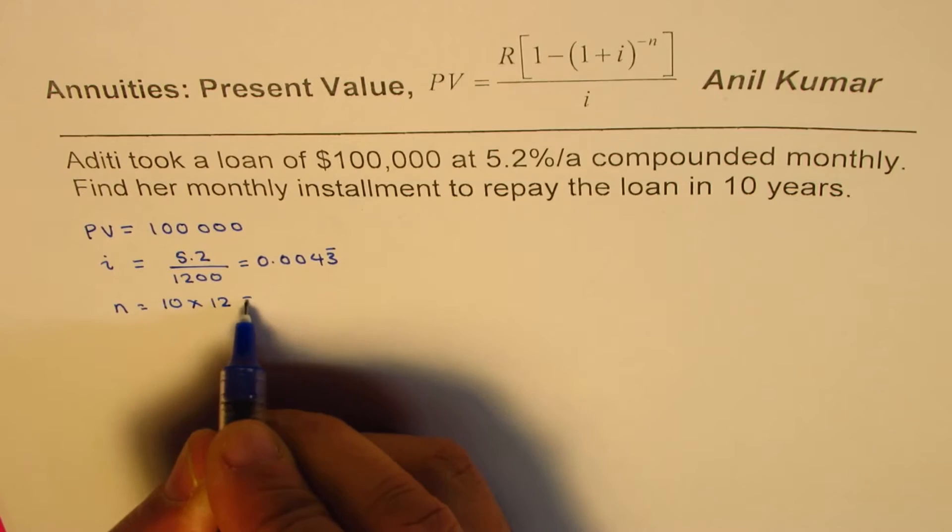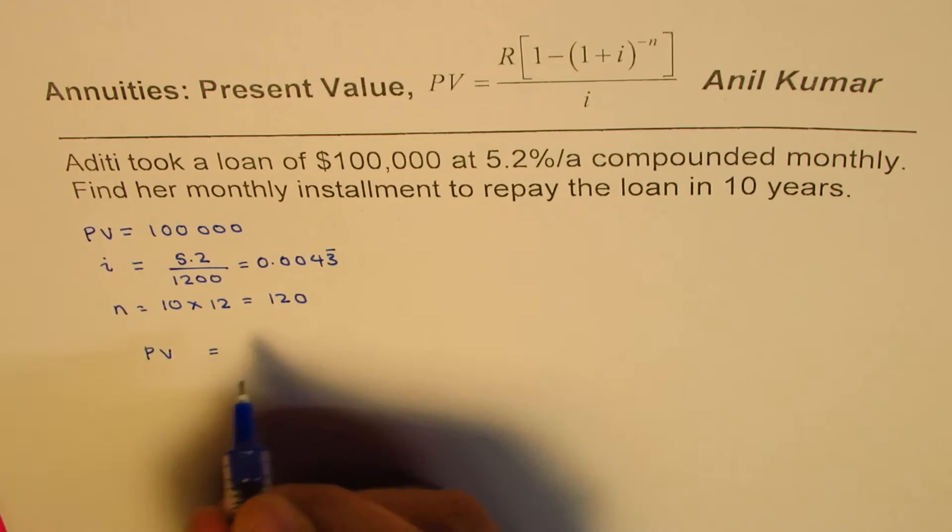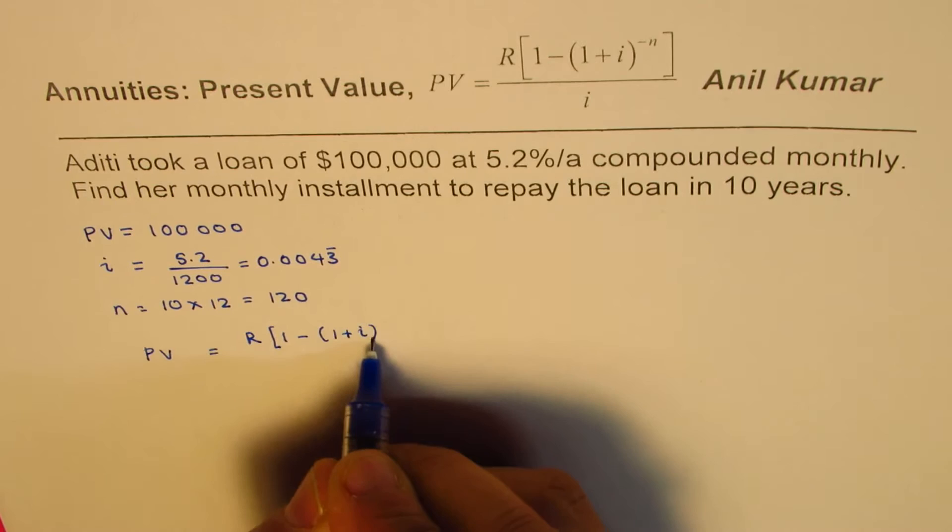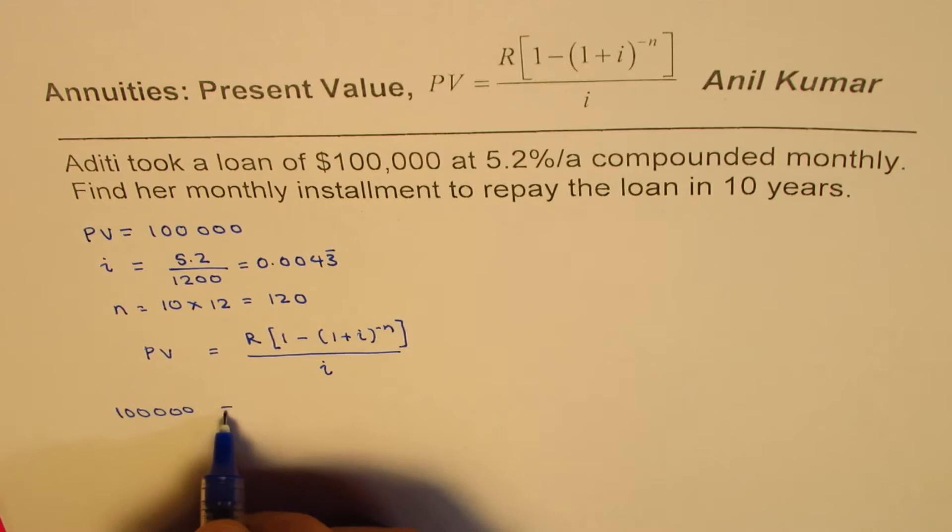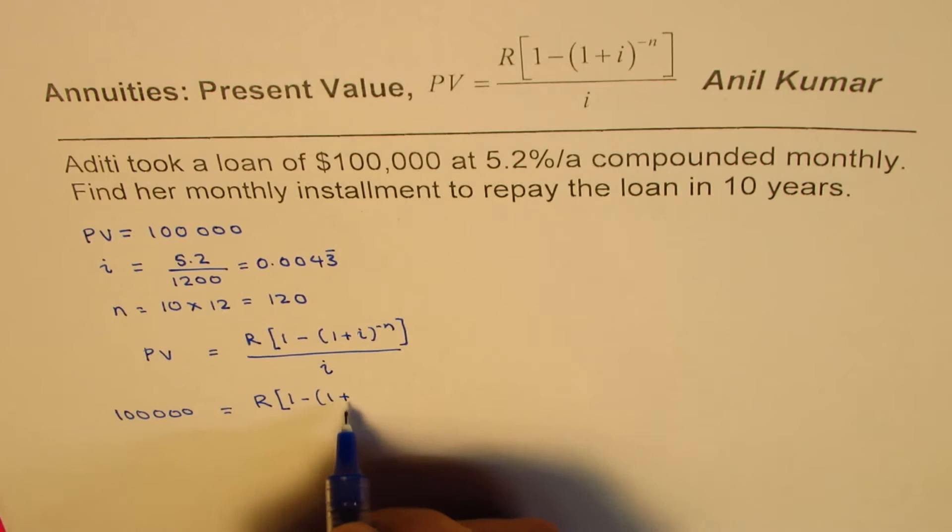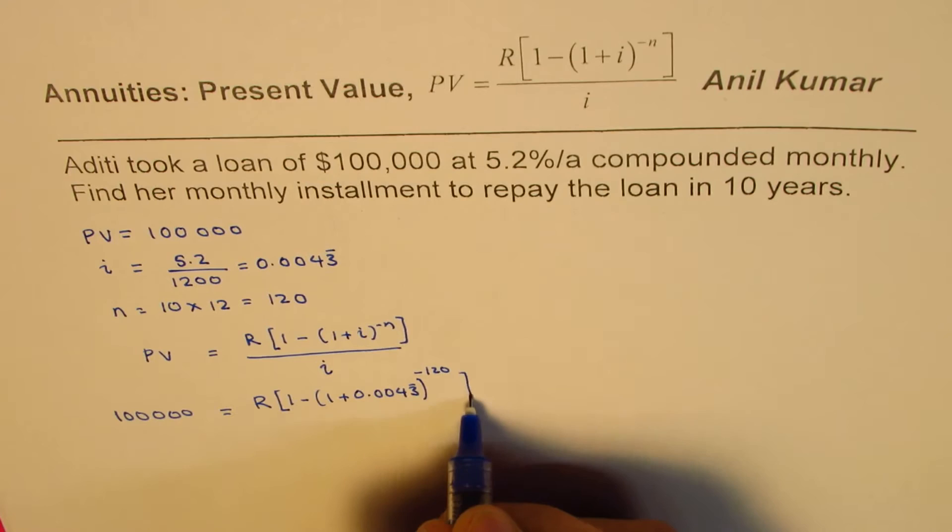Good. Knowing all this, we can calculate R. Let's apply the formula: present value equals R times [1 - (1+i)^(-n)] divided by i. So 100,000 equals R times [1 - (1 + 0.00043 recurring)^(-120)] divided by 0.00043 recurring.